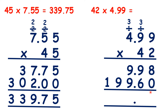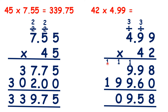So if we add up our totals: 8 plus 0 is 8, 9 plus 6 is 15, 1 plus 9 plus 9 is 19, 1 plus 9 is 10, and 1 plus 1 is 2. So because we've already put our decimal point in our answer, we have 209.58.